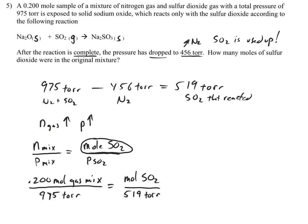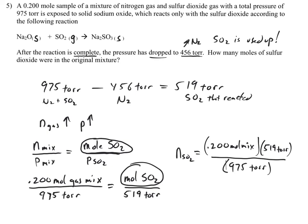Solving for moles of SO2, we're going to multiply the moles of the mixture times the 519 torr divided by 975 torr. So the moles of SO2 equals 0.106 moles SO2.